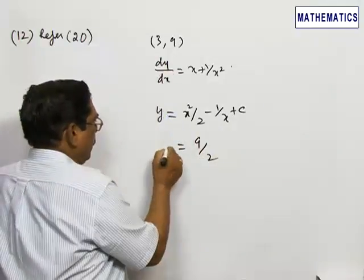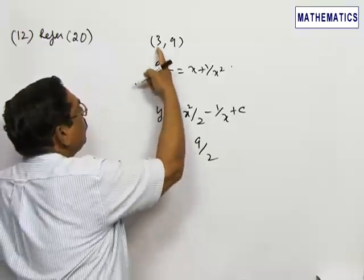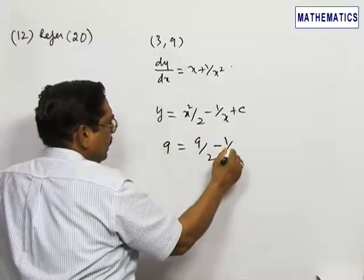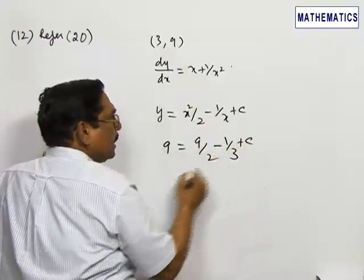Therefore c = 29/6. Now substituting c = 29/6 back into the equation and removing fractions...